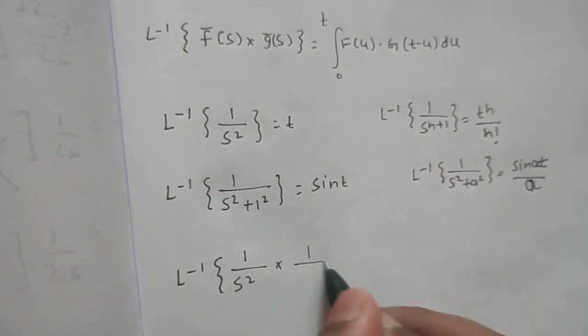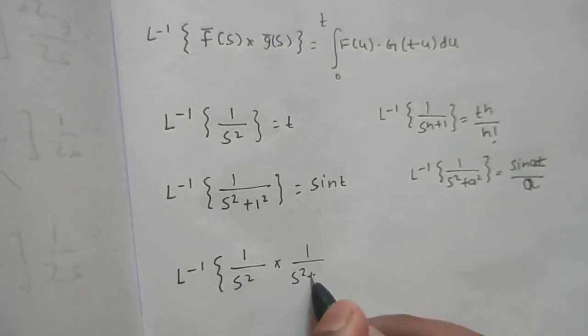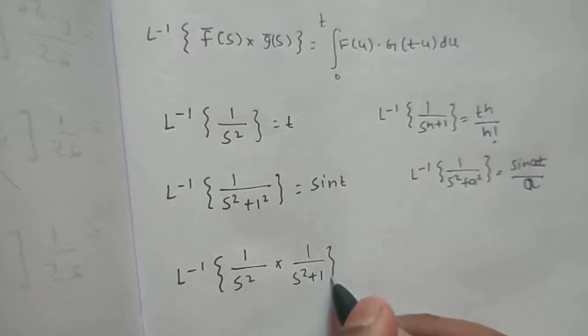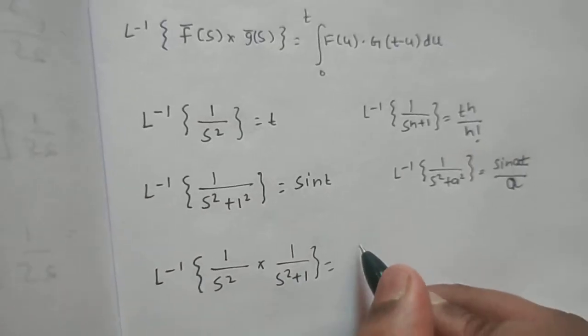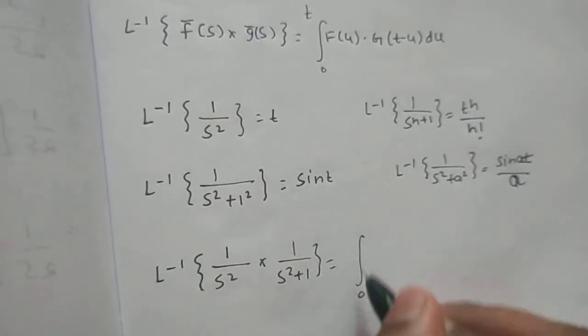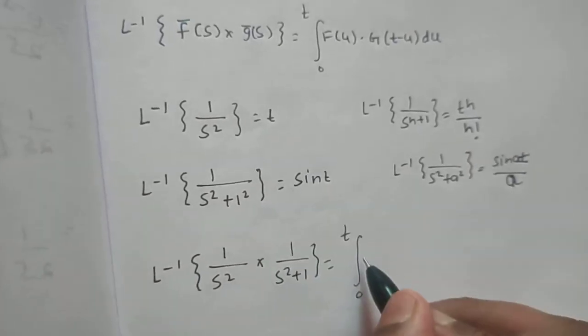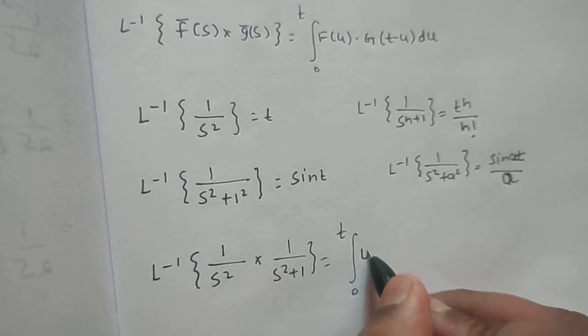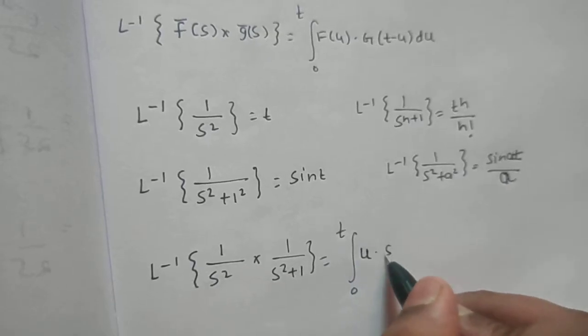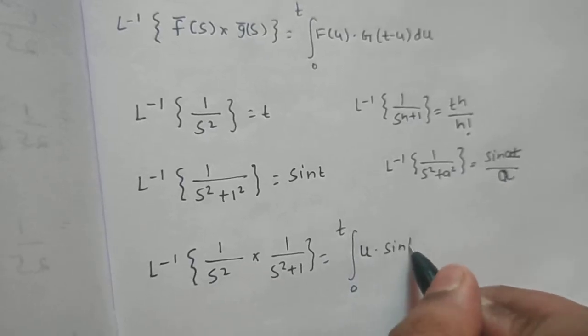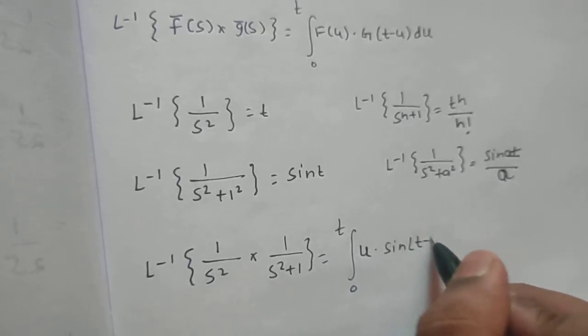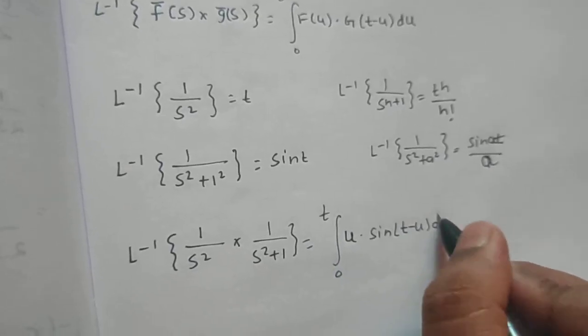So the Laplace inverse of [1/s²]·[1/(s²+1)] is simply the integral from 0 to t of u·sin(t minus u) du — replacing t by u in the first function and t by t minus u in the second.